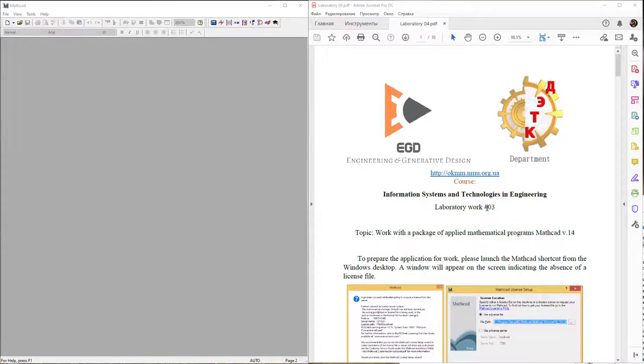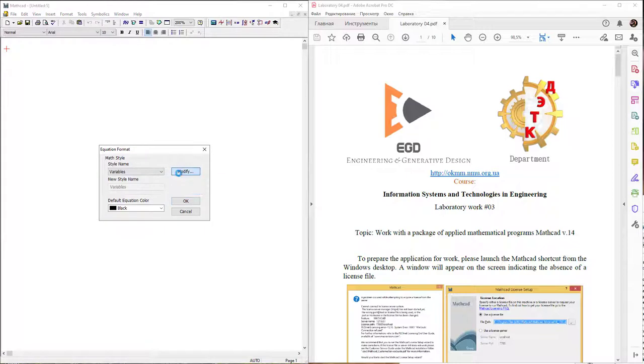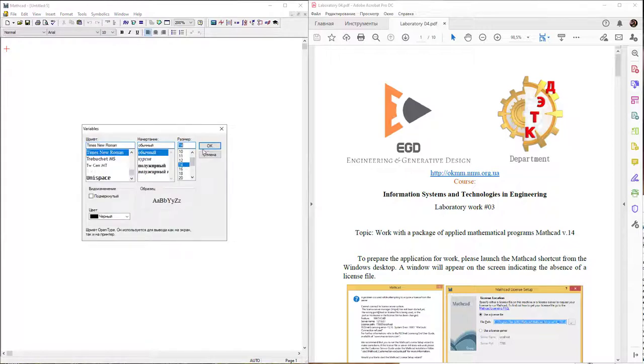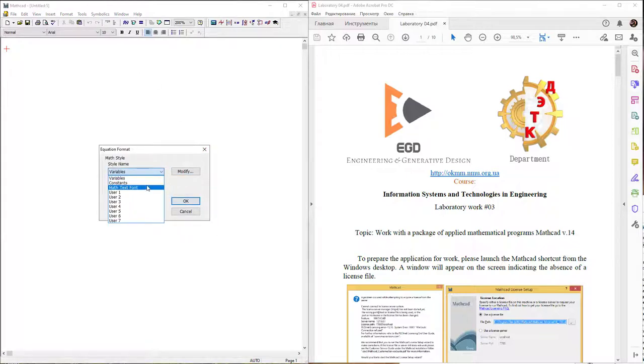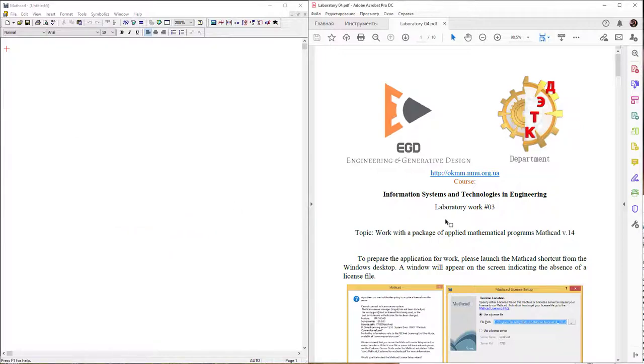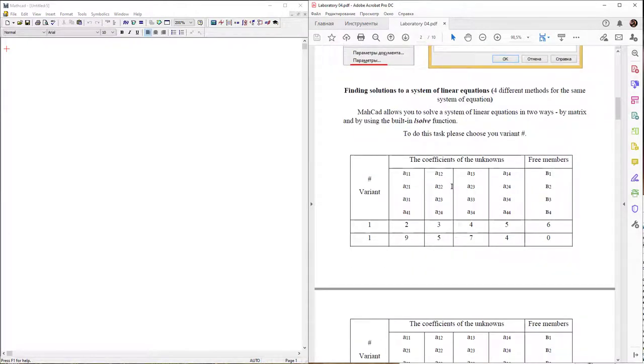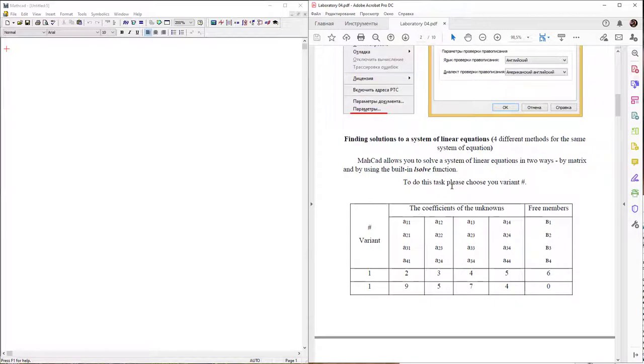Laboratory 03. Create a new document in MathCAD. Open your tutorial. Change page size of your document. In equations, change font size to 14. Find the starting of your work. Find your variant number.